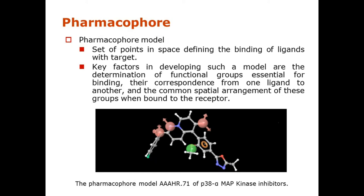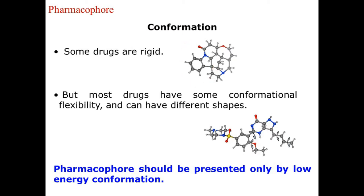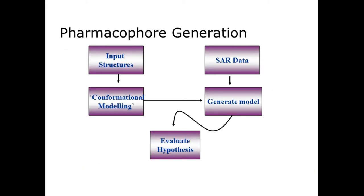The figure represents the generated pharmacophore model AAAHR-71 of P38-alpha MAP kinase inhibitors. Some drugs are rigid, but most drugs have conformational flexibility and can have different shapes, so the pharmacophore should be represented only by the low energy conformation. In the first step for pharmacophore generation, structures were imported into the project and subjected to LigPrep for energy minimization. Then the possible number of conformers were generated using the ConfGen module, and using the structural activity relationship data, the pharmacophore hypothesis was generated.